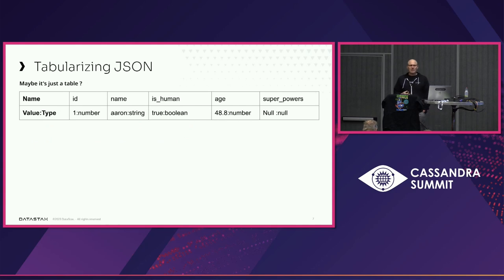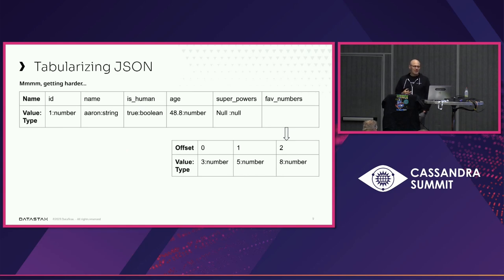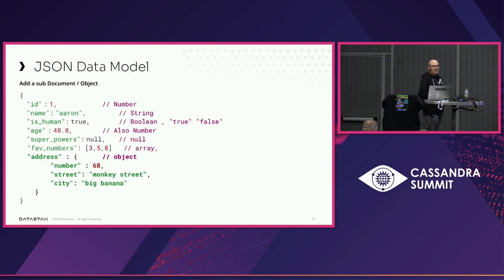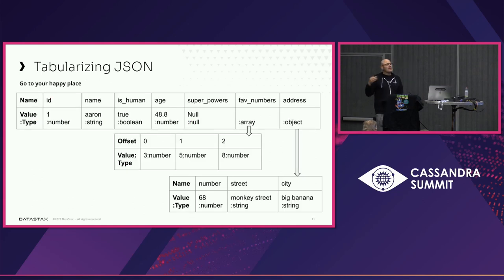Maybe we could just put this into a table, since we're coming from Cassandra. It looks easy at first. But add an array of things — maybe numbers, maybe anything — and now in a table perspective you could have a CQL list to hold the array, though you don't know what's in it. Add a sub-object like address pointing to an object with other fields, and it gets harder. Maybe you'd use another table or a CQL map for the sub-object.